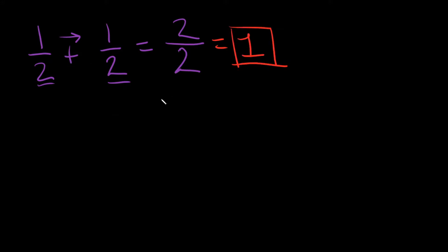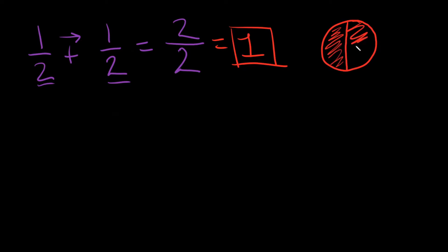So 1 half plus 1 half is equal to 1, which makes sense. Because if I had a pie and I cut it into two pieces, I have half of the pie here and half of the pie there. When we combine them, it makes 1 whole pie, which is why we get 1.